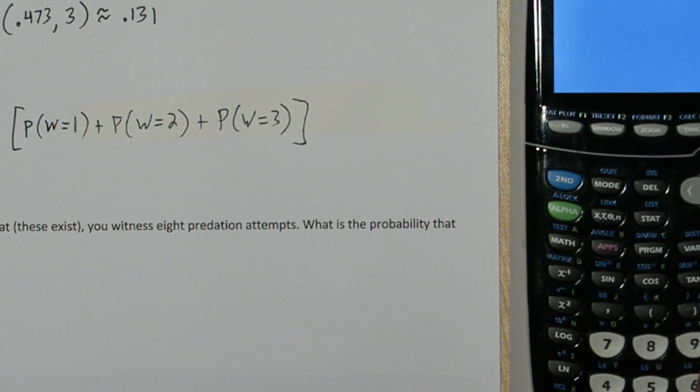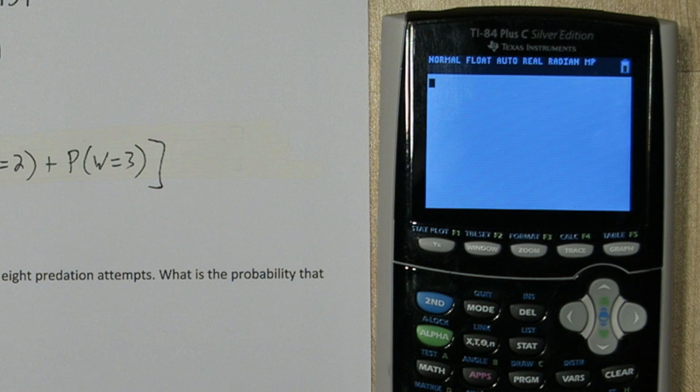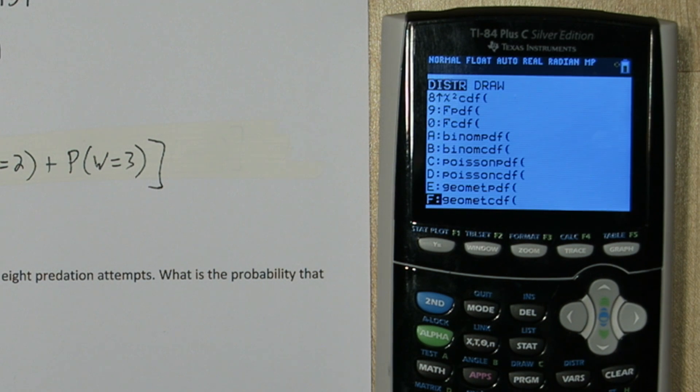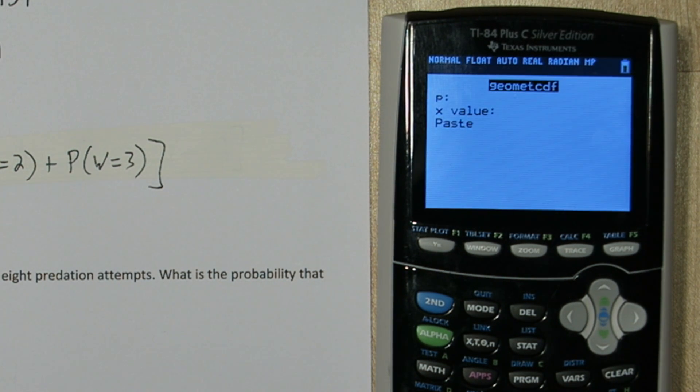Start by typing the one minus. Now press 2nd VARS and go to Geomet CDF for the cumulative density function. Type in our probability of success .473, and for x value type 3.